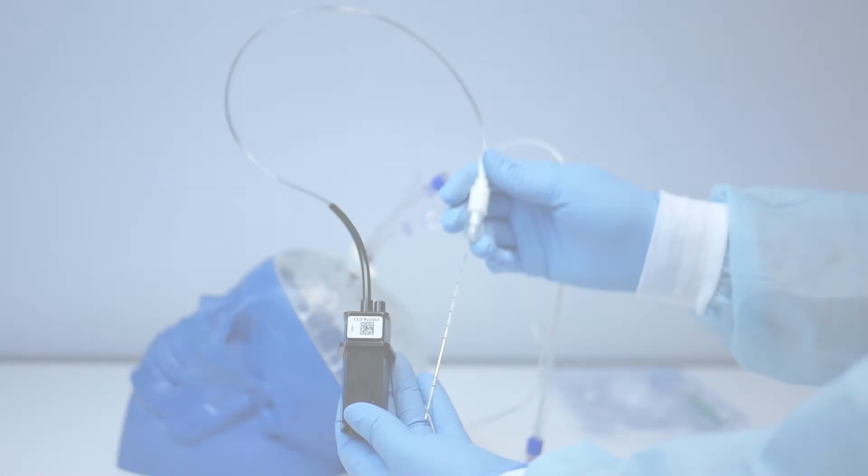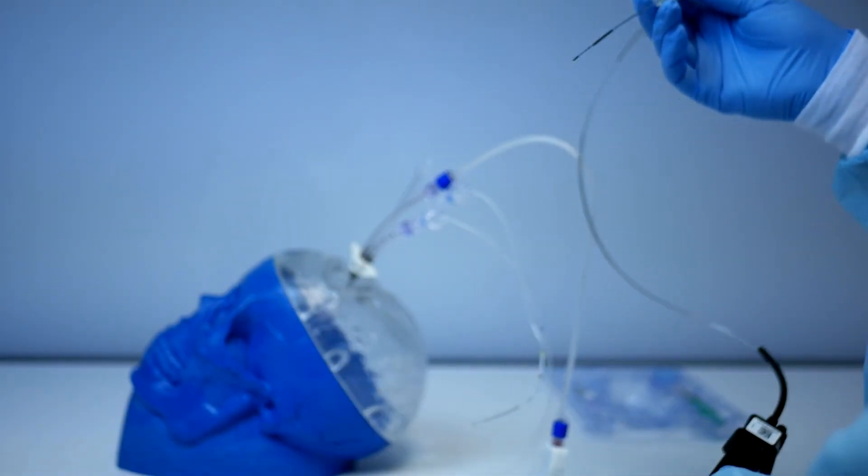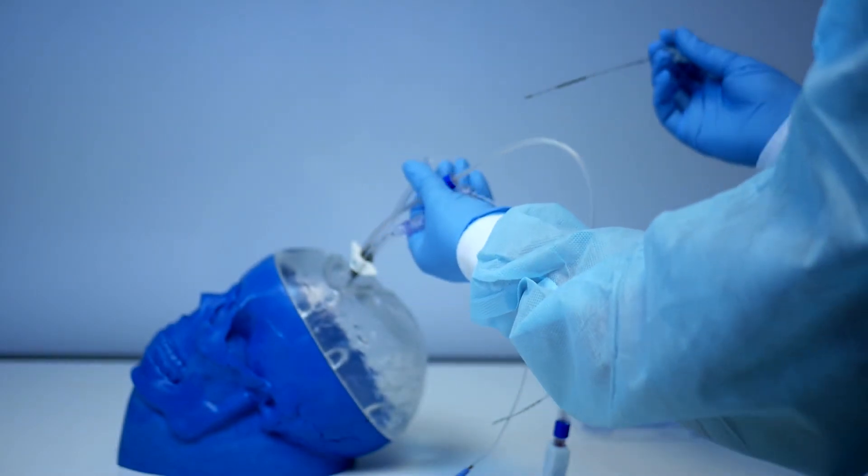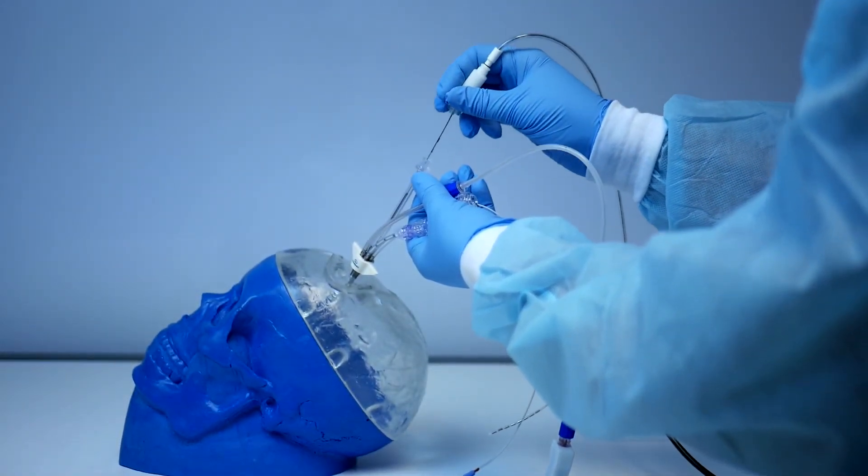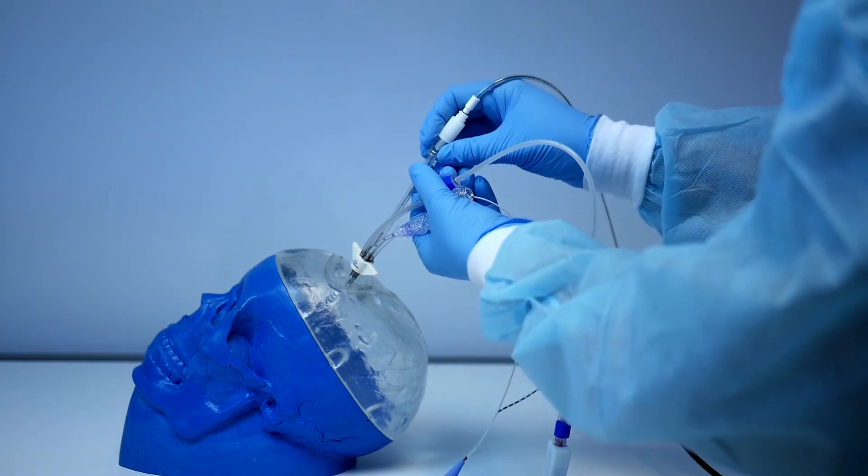The Integra Camino ICP probe does not require any additional components from the quadlumen bolt kit. Simply insert it through the large pigtail and turn the lure lock fitting clockwise to secure.